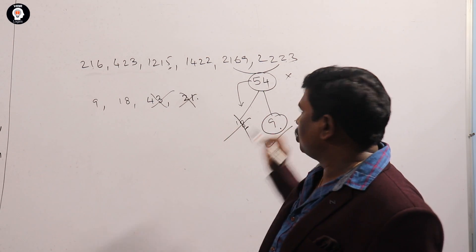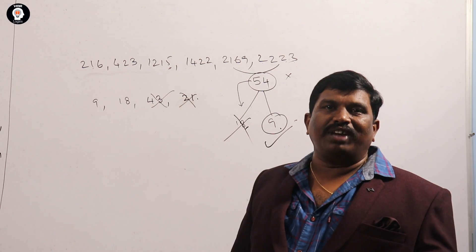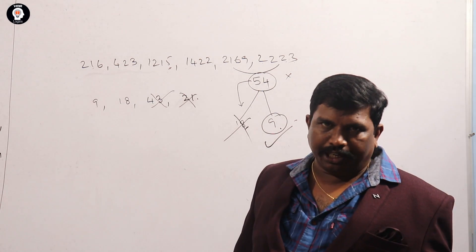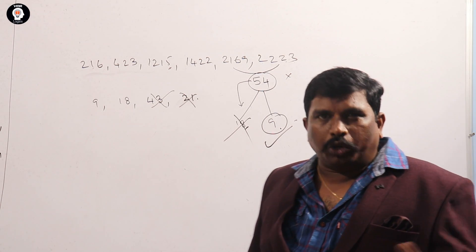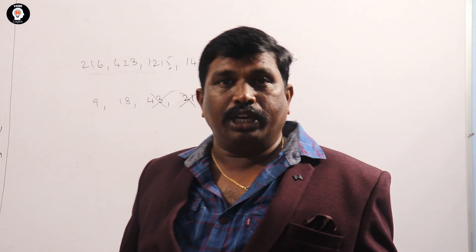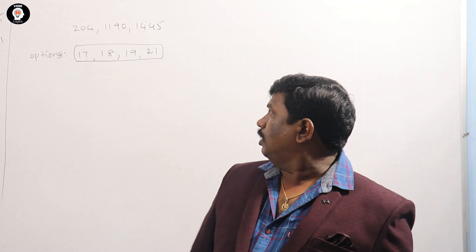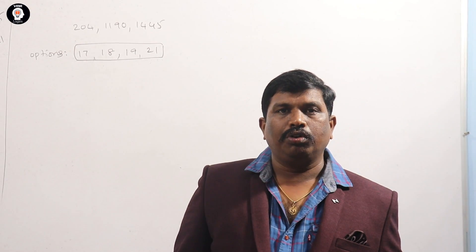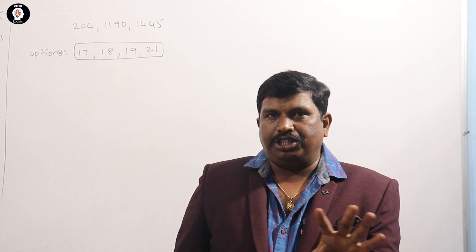That is the GCD. This is the way to calculate HCF. You can try two or three questions. HCF will actually come out. Let's see one more example of finding GCD.